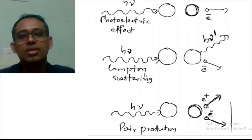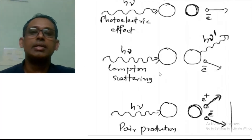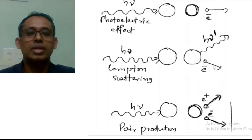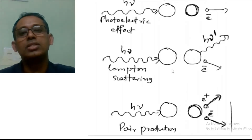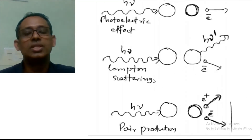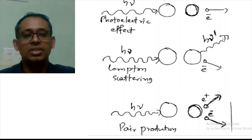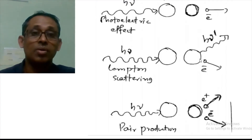Another one is Compton scattering. Here, an incoming photon is scattered by an electron — the electron gets scattered by this photon. In that process, the photon loses its energy: its frequency decreases and its energy decreases. The atom absorbs energy.